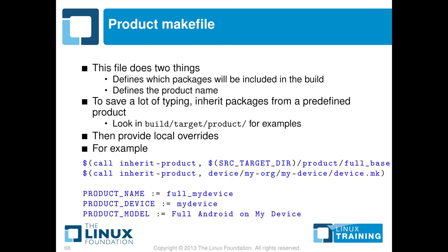The next file we need to look at is the product makefile. This does a couple of things: it defines the packages that are going to go into this product, and it defines some straightforward things like the name of the product. In the example on the slide, we call inherit-product to bring in a predefined set of packages — in this case, we're bringing in full_base.mk, which is the full Android definition. And then underneath that, we're bringing in our own customized set of packages, which are in device.mk. And then finally, we finish off by defining the name of the product and the model name.